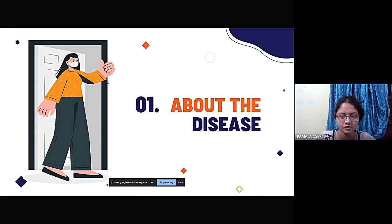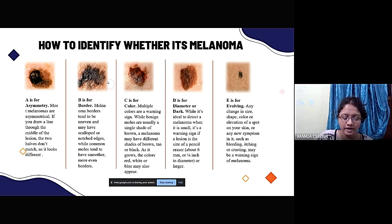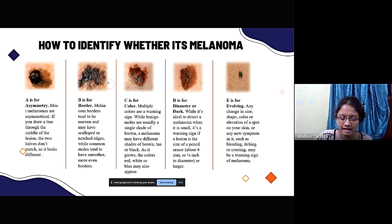Now we look at the details of the disease — how to identify whether it is melanoma or not. There are five features, known as the ABCDE mnemonics of melanoma. A is for Asymmetry: the affected area is asymmetric in nature, meaning its shape is uneven.